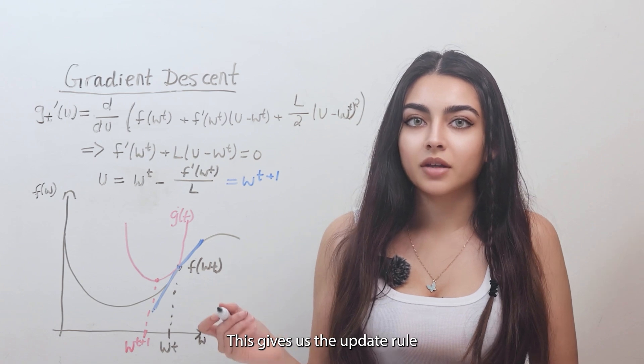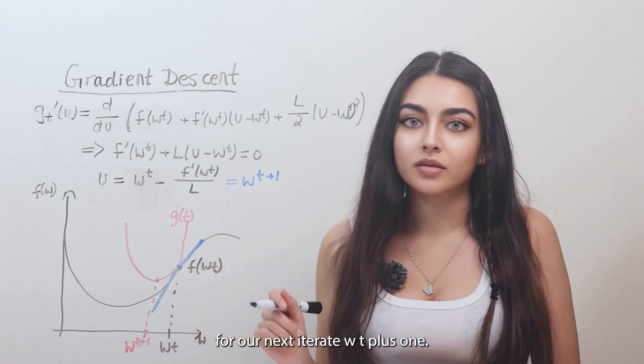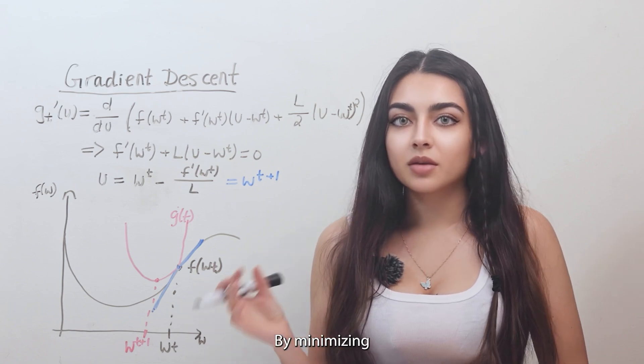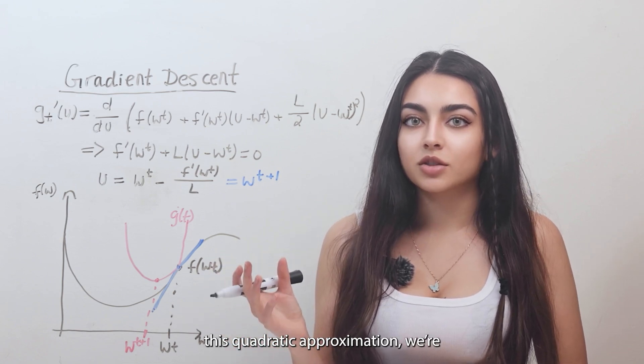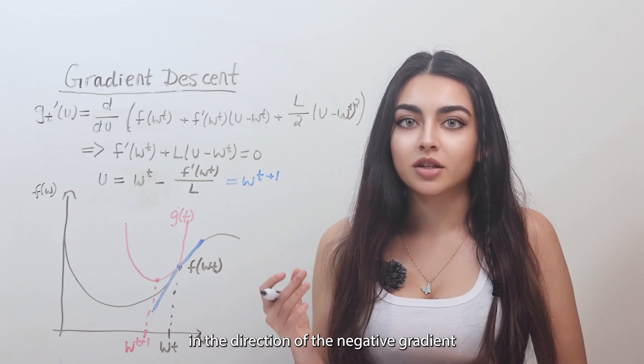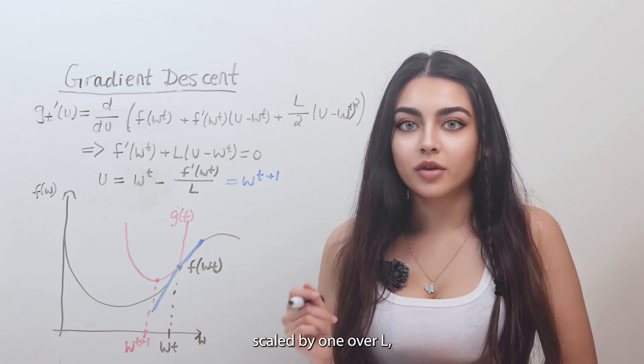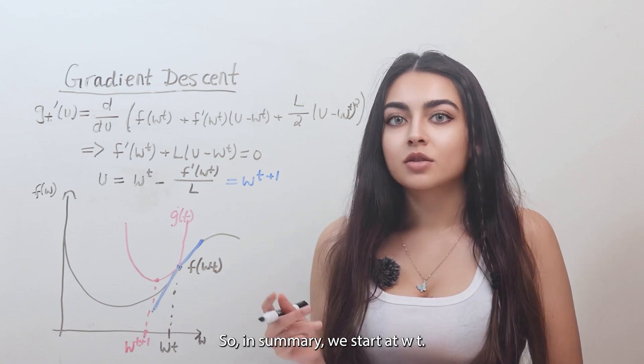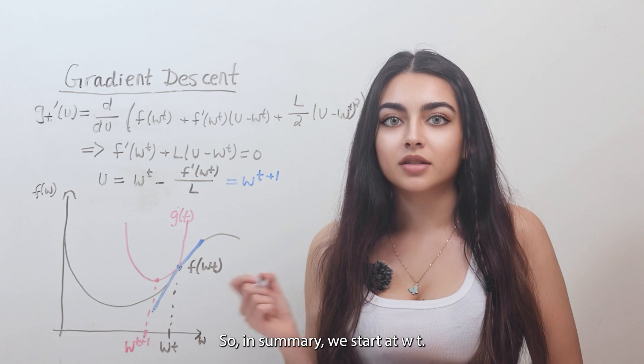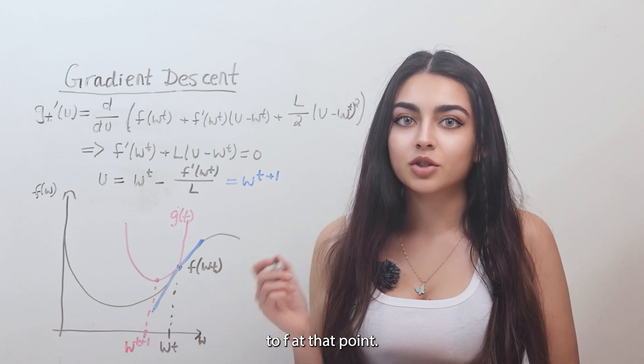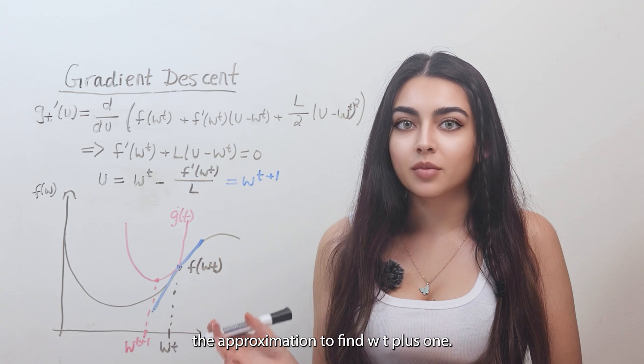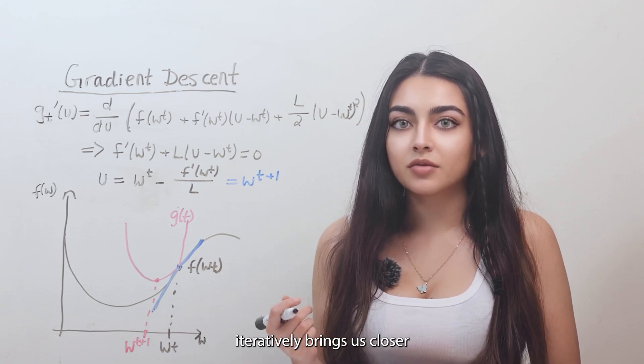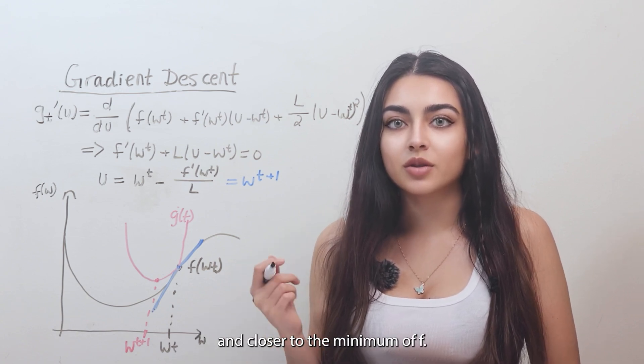This gives us the update rule for our next iterate wt plus 1. And this is exactly how gradient descent with a quadratic upper bound works. By minimizing this quadratic approximation, we're essentially taking a step in the direction of the negative gradient, scaled by 1 over L, which controls how large our step is based on the smoothness of the function. So in summary, we start at wt, build a quadratic approximation to f at that point, then minimize the approximation to find wt plus 1. Repeating this process iteratively brings us closer and closer to the minimum of f.